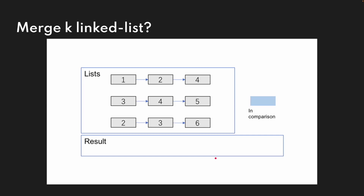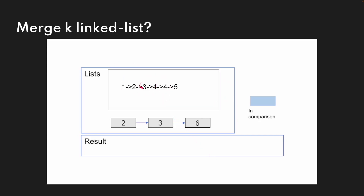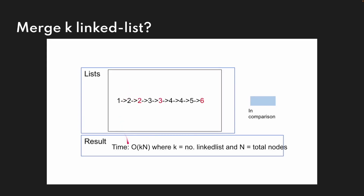Now the problem is how to merge k link lists. Using a similar approach, we first merge the first two link lists to get a longer list, then use that to merge the remaining link lists — and so on until we merge all of them. The time complexity here is O(k times n), where k is the number of link lists and n is the total number of nodes, since we iterate k times and merge two lists each iteration.